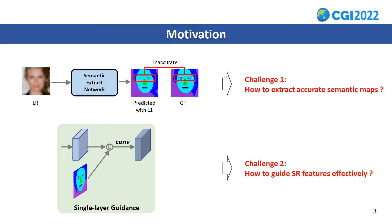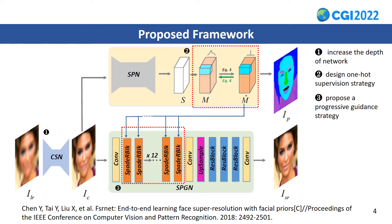In this paper, we design two simple and effective strategies for each of these challenges. As shown in the figure, the proposed framework is based on FSR-NET. It mainly consists of three paths: the coarse super-resolution network, the semantic parsing network, and the semantic progressive guidance network.